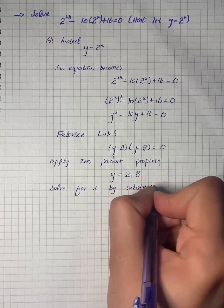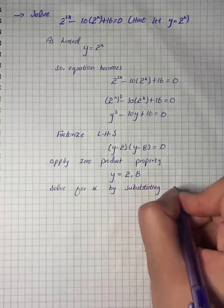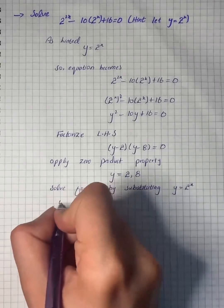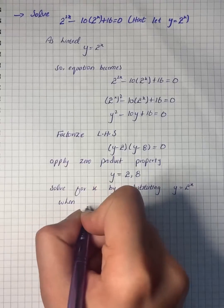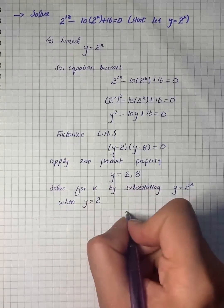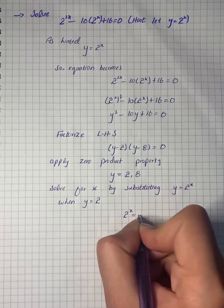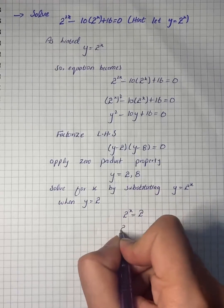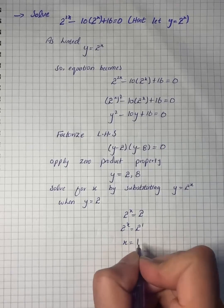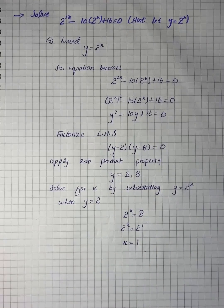When y = 2, we have 2^x = 2, which means 2^x = 2^1, so x = 1.